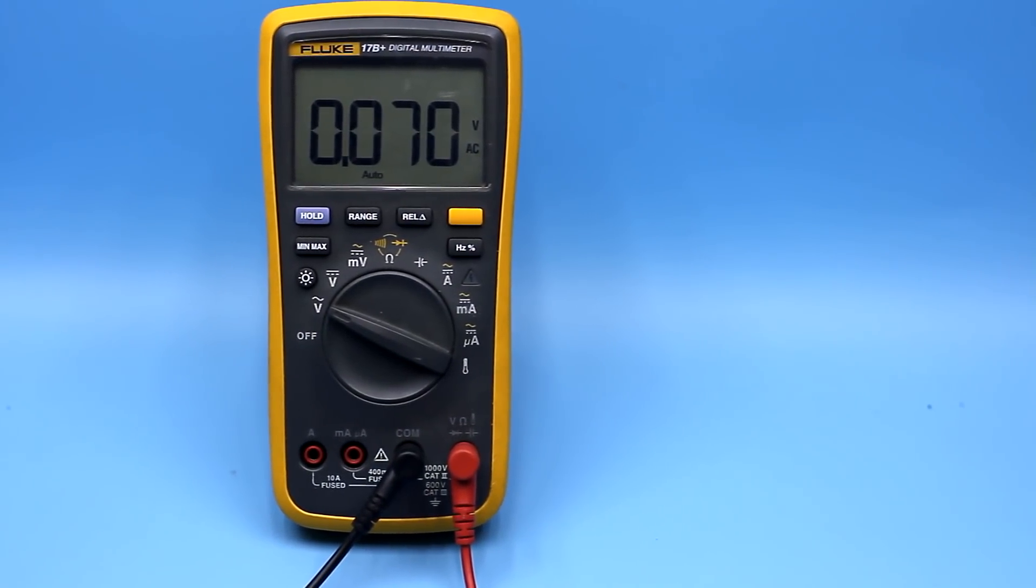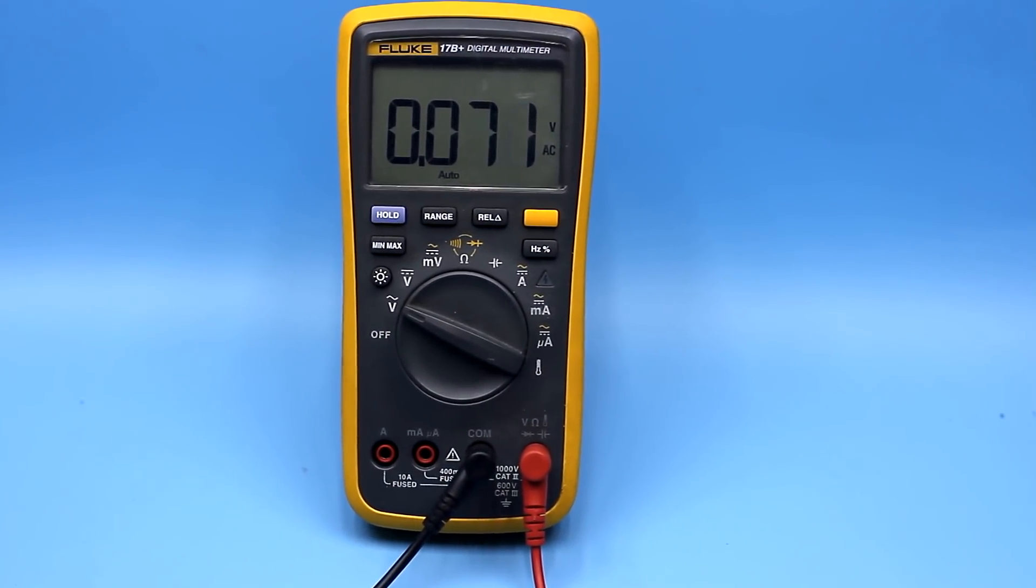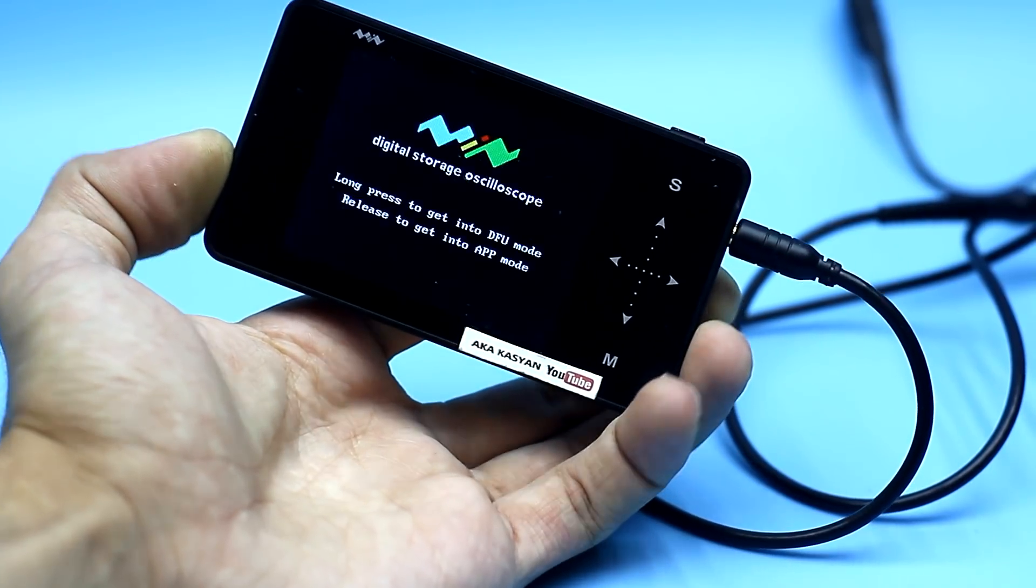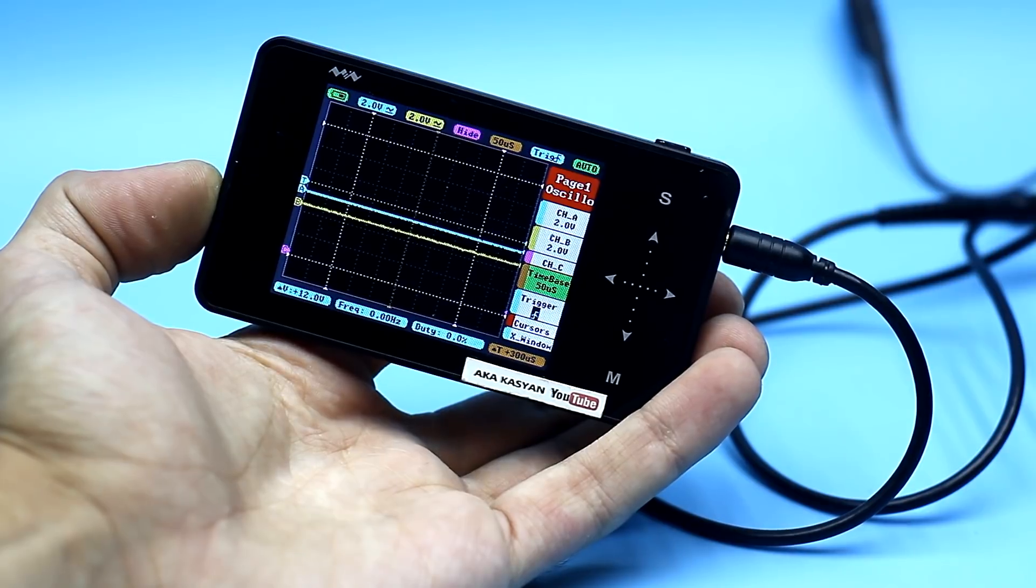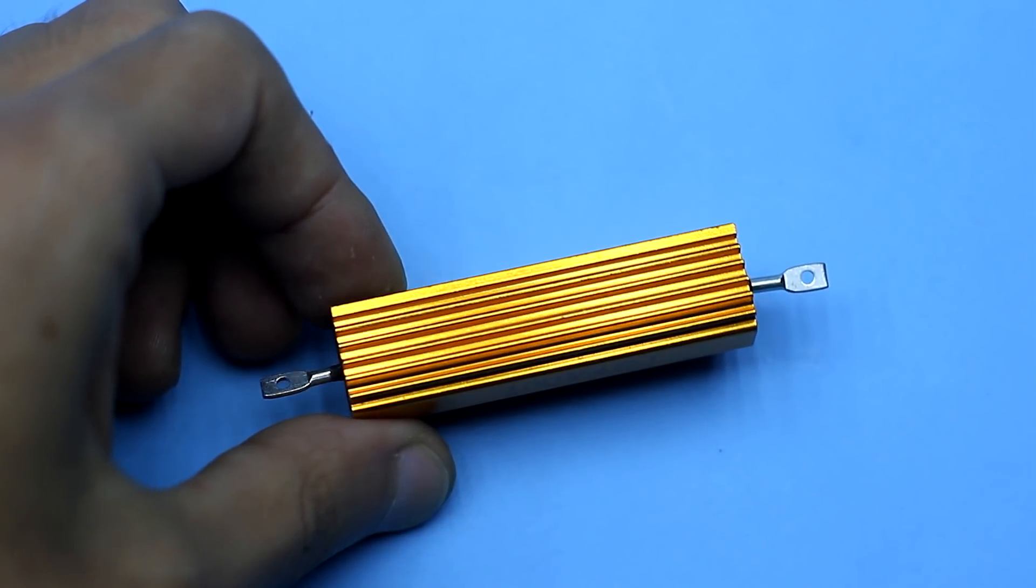Third, we need a multimeter that will measure the voltage on the load. Fourth, an oscilloscope that will allow visual control of the waveform on the load. And of course we need a load itself.